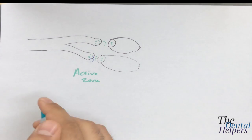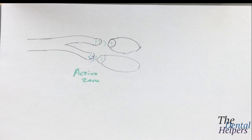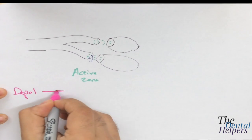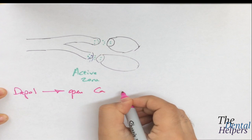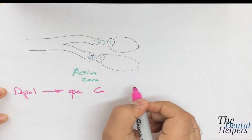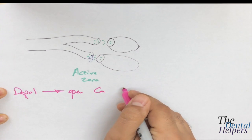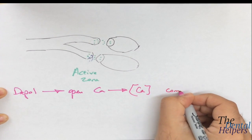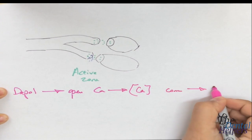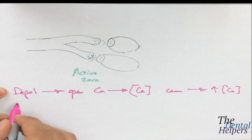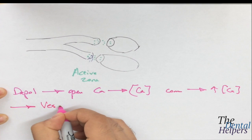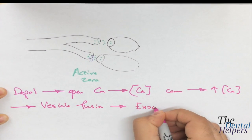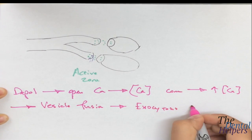Looking at the steps: first, we have depolarization at the nerve terminal. This opens the voltage-gated calcium channels, releasing calcium into the active zone. Then calcium comes down the electrochemical gradient, which increases free calcium concentration. This allows for vesicle fusion, then exocytosis into the active zone, and finally release.